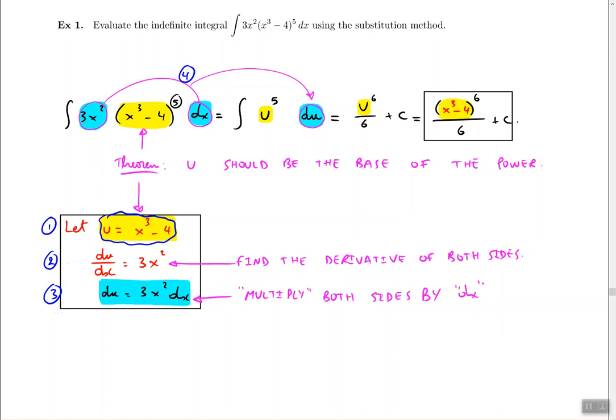Step four is to find the terms that will give you du. Step five is to find the terms that will turn into u. Once you do that, you integrate - that's step six. Finally, step seven is to change u back to the original variables, which were x. That's how the process works.